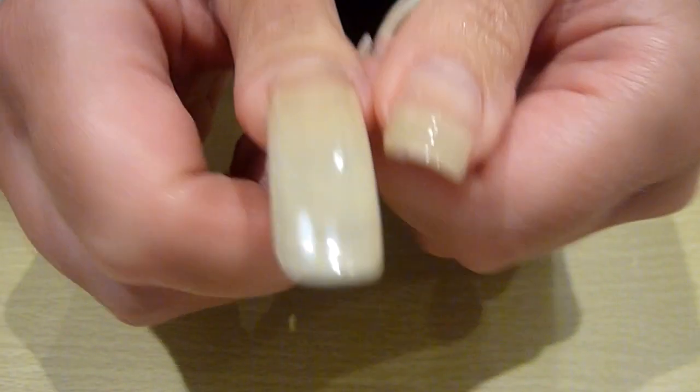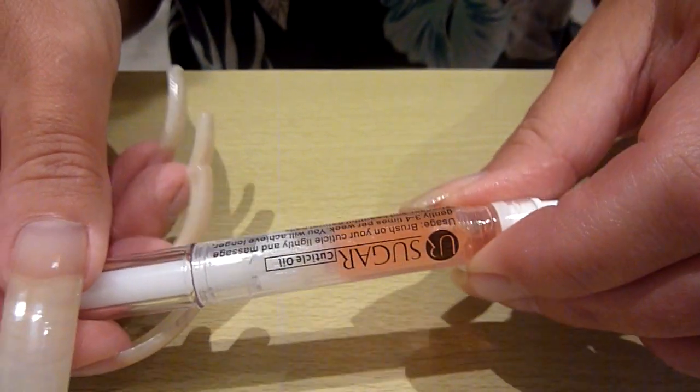Or, like I say, when I travel with it, I'll use it. It does say on the side, brush on your cuticle lightly and massage gently three to four times per week. But I do that every night, once a day.